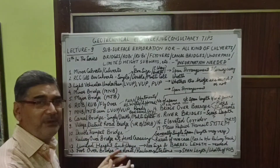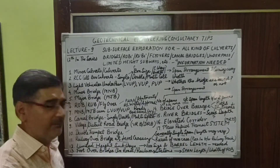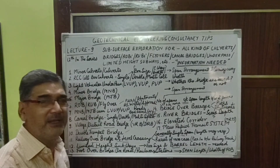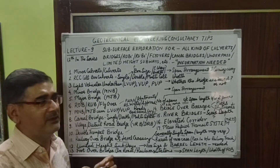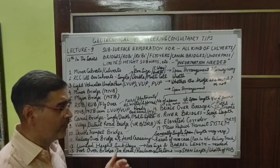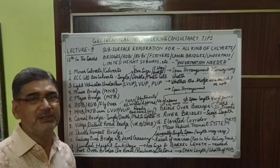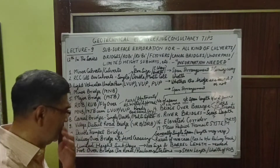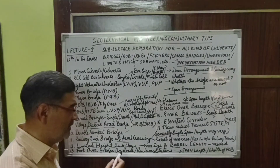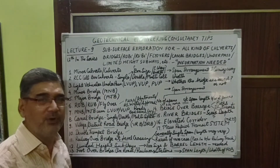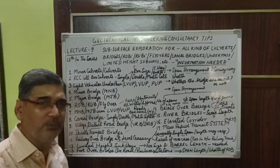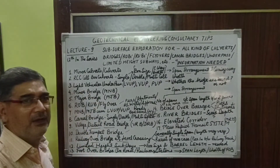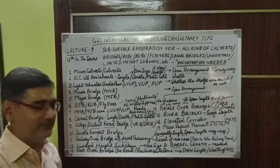The pre-cast RCC box culverts of specified dimensions — specified by the railways for that particular site — are pushed beneath the railway track while the railway is moving, but as a caution the railway speed is reduced to 10 or 20 km/h during construction. I have seen this kind of construction in cities as well, where for limited height subways, 3 boxes are pushed in — usually depending on the width of the railway track, i.e., the barrel length.